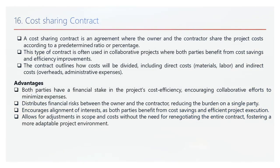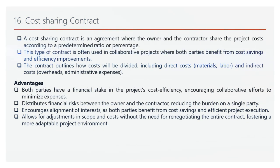Advantages. Shared financial stake: both parties have a financial stake in the project's cost efficiency, which encourages collaborative efforts to minimise expenses and optimise project performance. Balanced financial risk: this contract distributes financial risks between the owner and the contractor, reducing the burden on any single party. Alignment of interests: it fosters alignment as both parties benefit from cost savings and efficient project execution. Flexibility in scope changes: this contract allows for adjustments in scope and costs without renegotiating the entire contract, creating a more adaptable project environment.